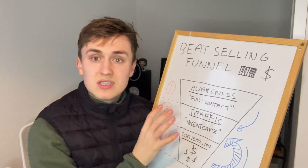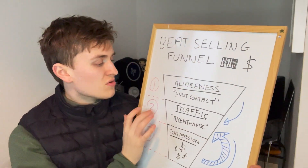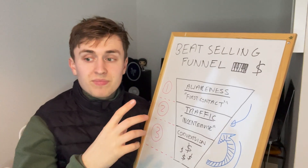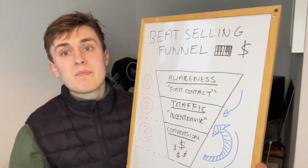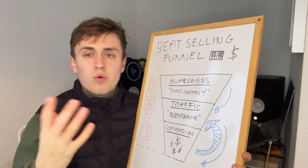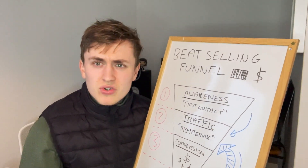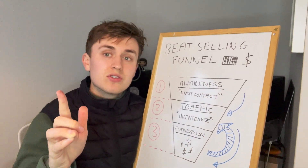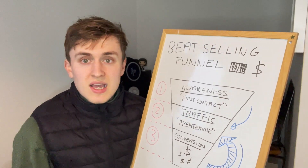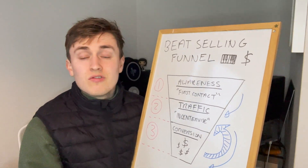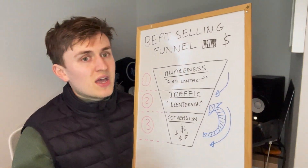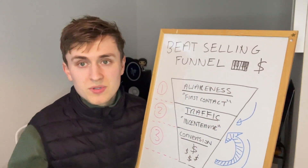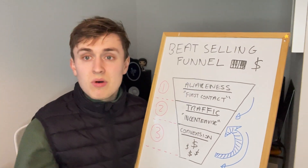Once you've got the email addresses, you want to move them down to tier two — the incentivize stage. You reach out to them via Instagram message or through the non-subscriber email list with the sole purpose of getting beats downloaded for free to collect their email address. Even if you already have their email, you want them to willingly opt into the subscriber list, and the most natural way is through free downloads.